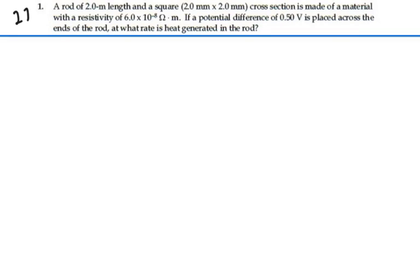Here's problem 27.1. A rod of 2 meters in length and a square 2 mm by 2 mm cross-section is made of a material with a resistivity of 6 times 10 to the minus 8 ohm meters. If a potential difference of 0.5 volts is placed across the ends of the rod, at what rate is heat generated in the rod?